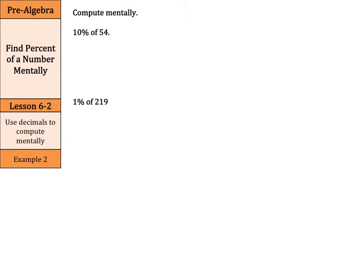Now, our next set uses decimals to compute mentally. And so we have 10 percent of 54. Well, 10 percent as a decimal, remember, you move your decimal point back twice, is 0.1 times 54. And what we're going to do there when you multiply by 1 tenth is simply move our decimal point back once with our number. So this becomes 5 and 4 tenths. And 1 percent of 219, you need to be careful here. This is 0.01 times 219. And so we're actually going to move our decimal point back to the left twice, 1, 2. And so this becomes 2.19, or 2 and 19 hundredths.